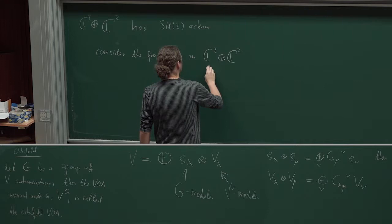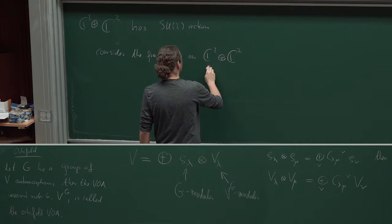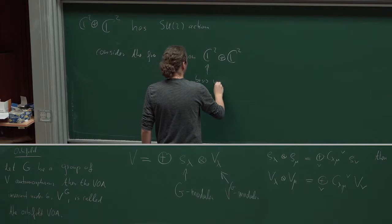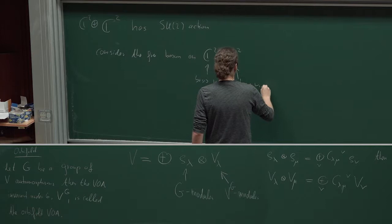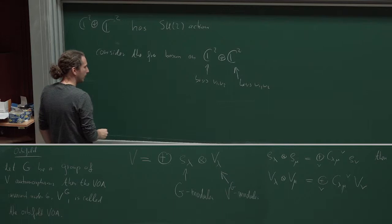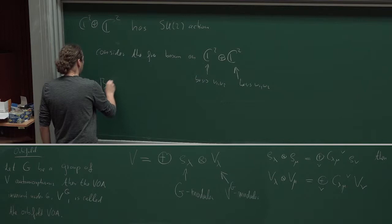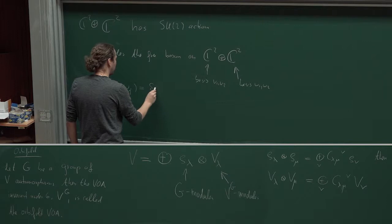We take a basis V1, V2 from the first copy and a basis W1, W2 from the second, and then the pairing B(Vi, Wj) is just δ_ij. That's, for example, how you can take it.